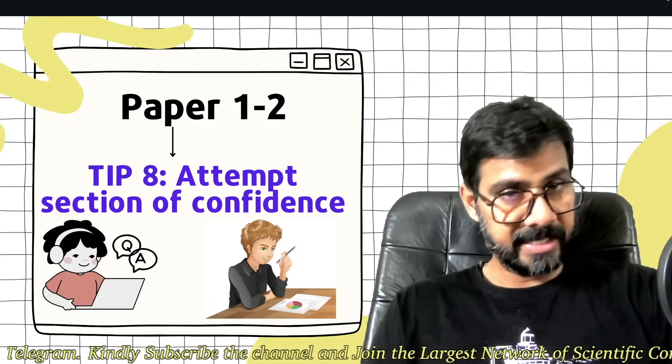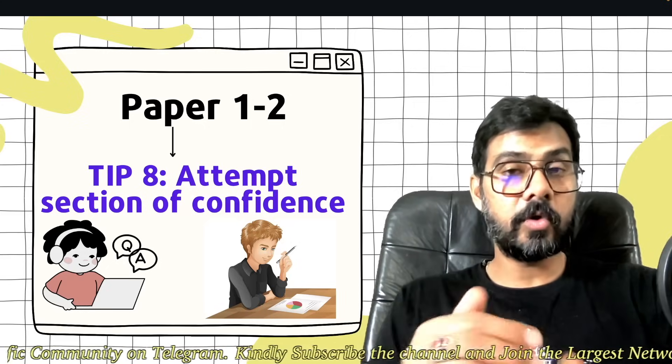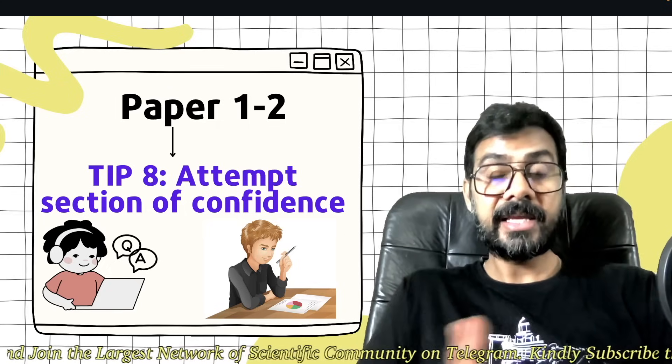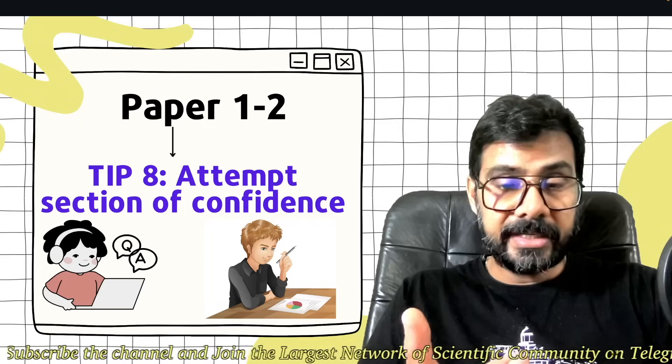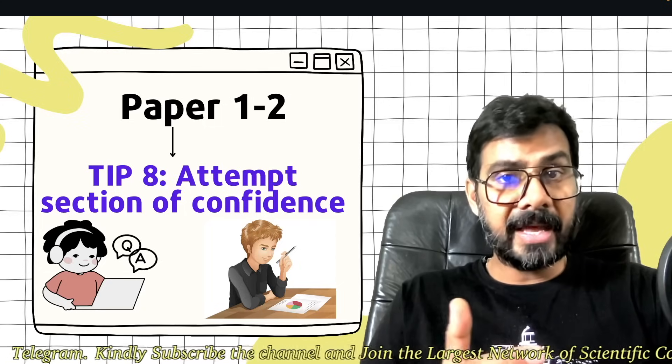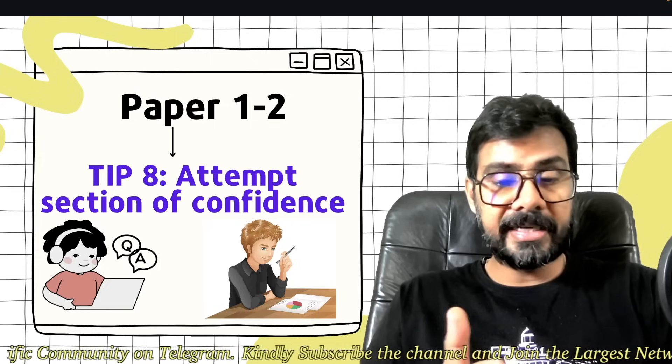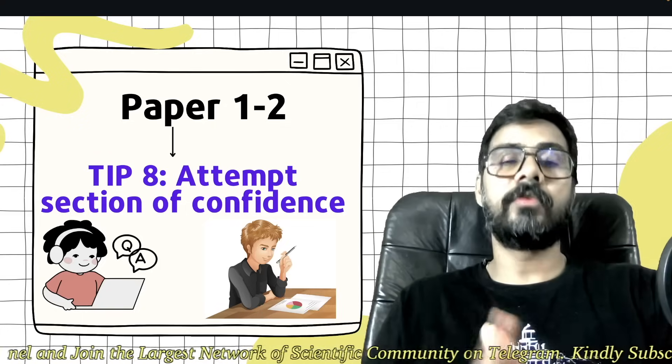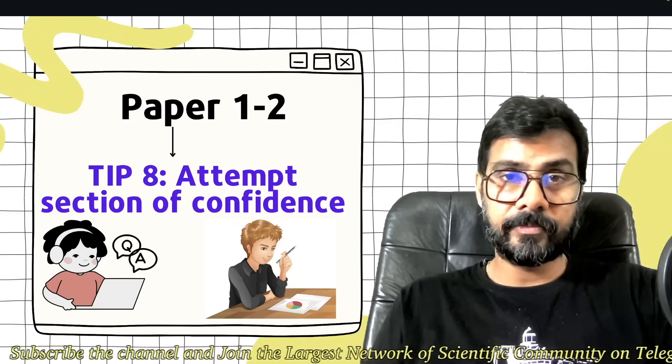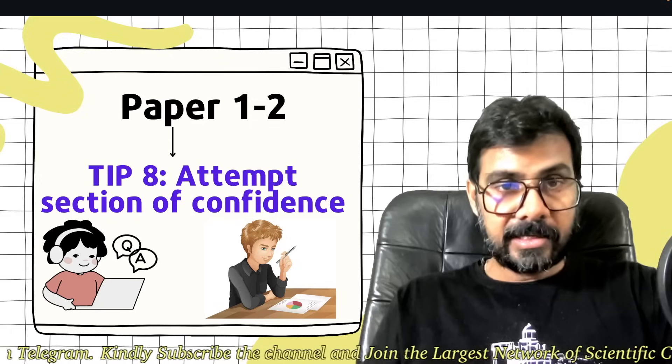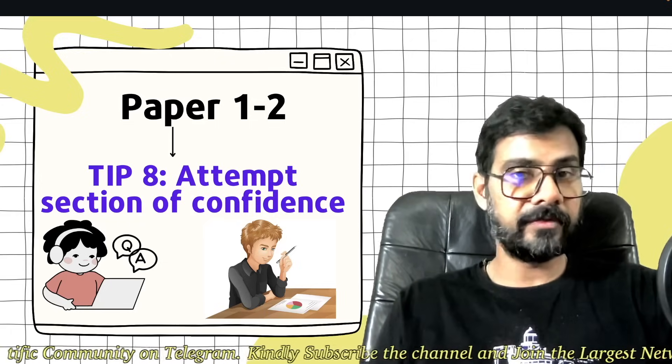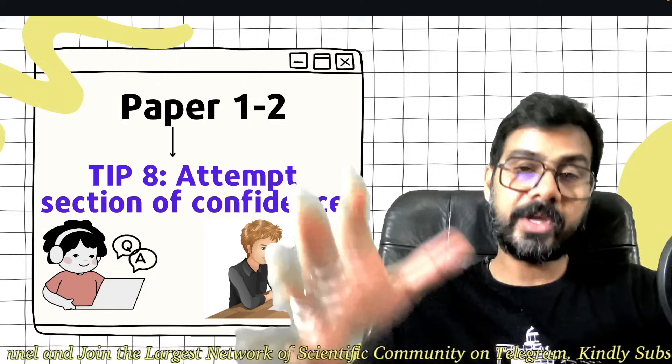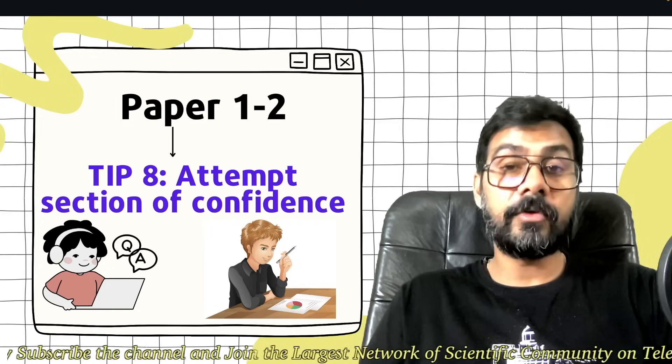Tip 7: Attempt section of confidence. As I mentioned earlier, attempt the section where you have confidence. This question you see and immediately understand - 'Oh, this question is from t-test.' If you see the next 5 questions are related to t-test, ANOVA, parametric test, student paired t-test, unpaired t-test - and you realize this section is not for me because I don't understand t-test - then leave this section. Only attempt the section of confidence where you know you can do it.